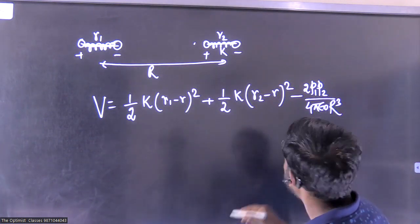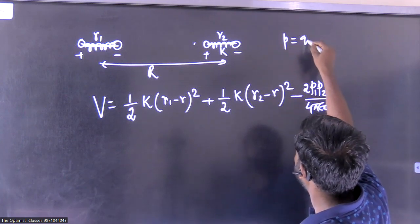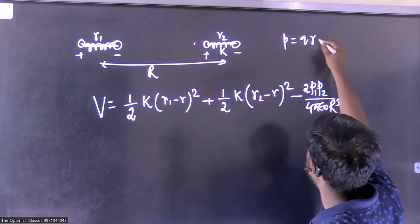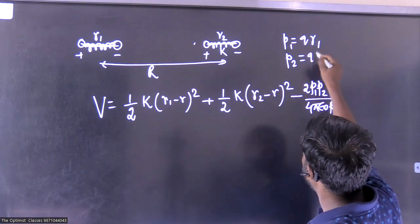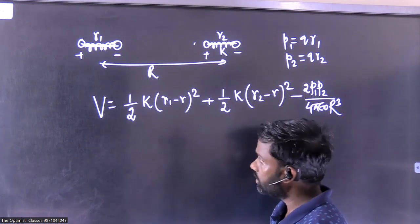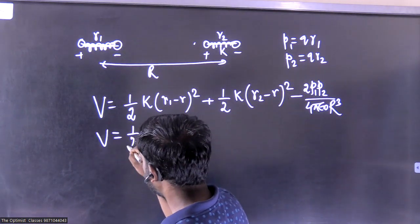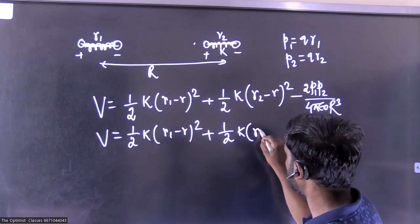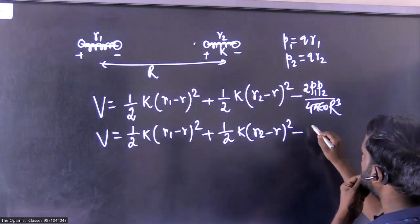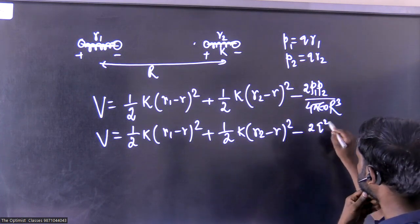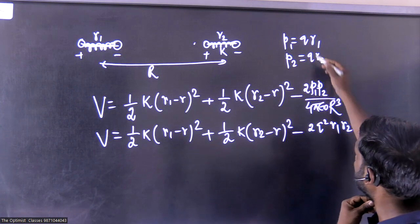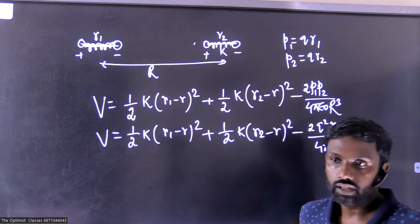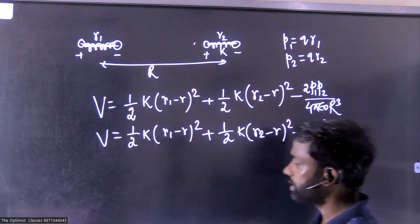The dipole moment is p = q * separation, so p1 = q*r1 and p2 = q*r2. Therefore the full potential energy is: V = (1/2)k(r1 - r)² + (1/2)k(r2 - r)² - 2q²r1*r2 / (4πε₀ R³). This is the interaction potential energy of the system. We will now use the potential energy approach rather than the force method to find the vibration frequency.